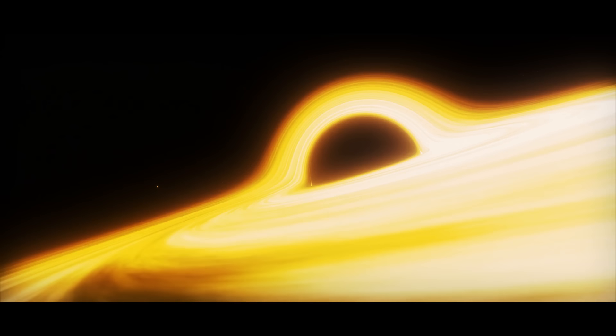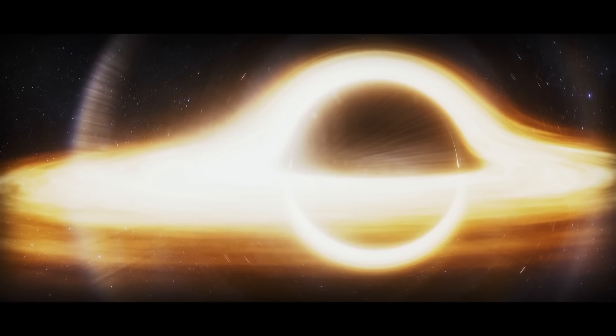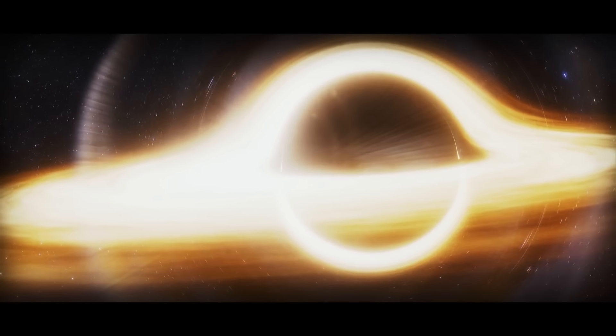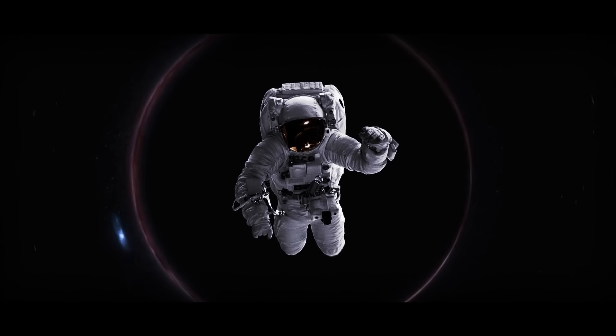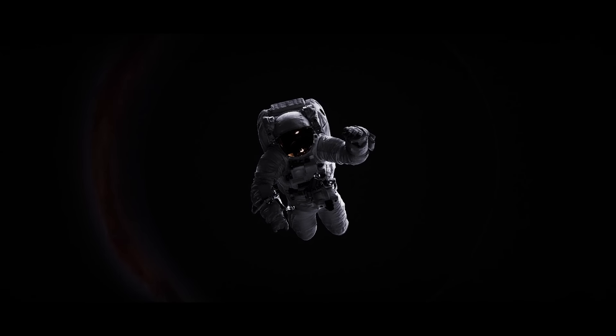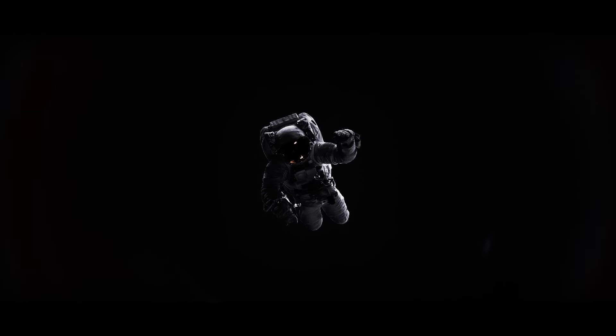Inside that shadow, there's an event horizon. The event horizon is the boundary around the black hole, beyond which nothing, not even light, can escape its gravitational pull. It's the point of no return, for the gravitational force is so strong that even the fastest object in the universe, light, can't escape. Once you cross the event horizon, you're doomed to fall toward the center of the black hole, where the laws of physics as we know them break down.